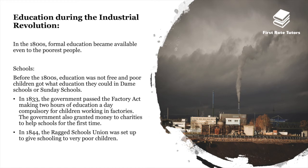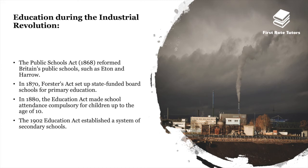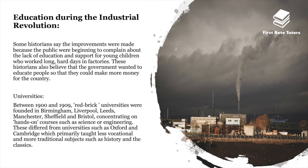In 1844, the Ragged Schools Union was set up to give schooling to very poor children. The Public Schools Act in 1868 reformed Britain's public schools such as Eton and Harrow. In 1870, Foster's Act set up state-funded board schools for primary education. In 1880, the Education Act made school attendance compulsory for children up to the age of 12. The 1902 Education Act established a system of secondary schools. Some historians say improvements were made because the public complained about the lack of education for children working long days in factories.